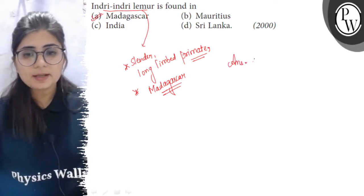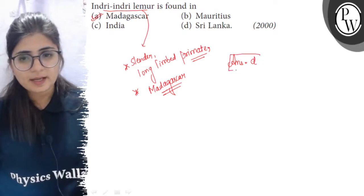Indri Indri Lemur, which is a primate, it is found in the Madagascar region.